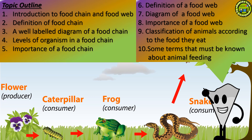Topic outline: 1. Introduction to Food Chain and Food Web. 2. Definition of Food Chain. 3. A Well-Labeled Diagram of a Food Chain. 4. Levels of Organism in a Food Chain. 5. Importance of a Food Chain. 6. Definition of a Food Web. 7. Diagram of a Food Web. 8. Importance of a Food Web. 9. Classification of animals according to the food they eat. 10. Key notes about animal feeding.